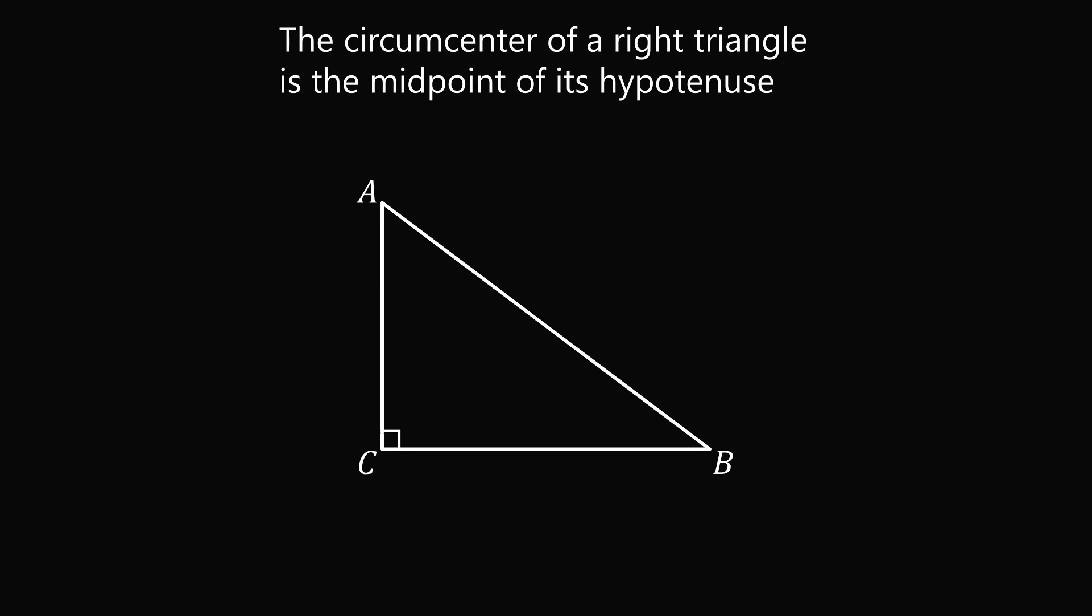So let me quickly review something. Suppose we have a right triangle ABC. We will show that the circumcenter of a right triangle is the midpoint of its hypotenuse. So let's first construct the circumcircle that passes through these three vertices. Let's say that O is the center of the circle.